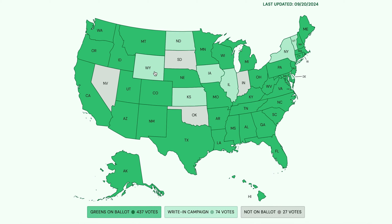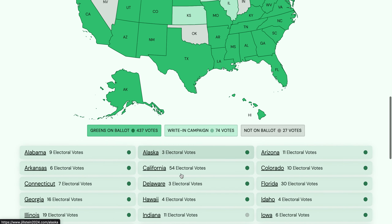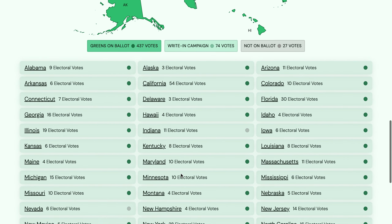Write-in status in Wyoming, North Dakota, Kansas, Iowa, Illinois, New York, Vermont, and Delaware. With every other state plus D.C. with Greens on the ballot — Washington D.C., Greens are on the ballot there.